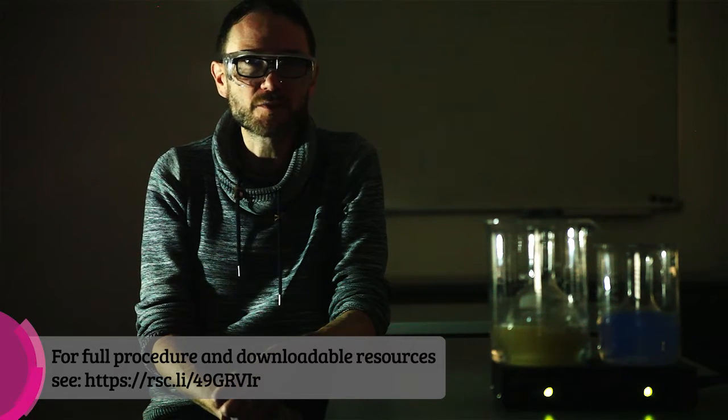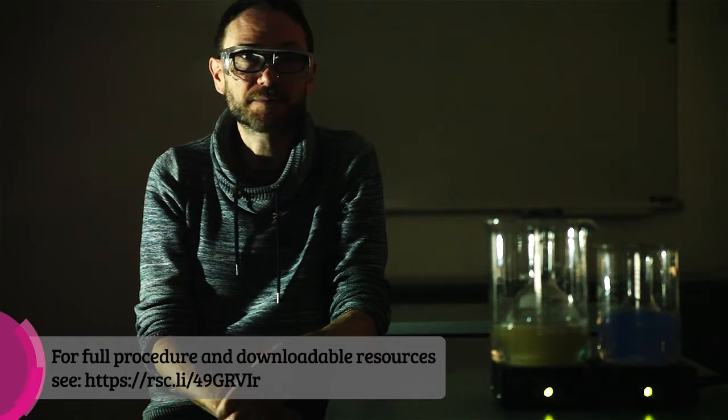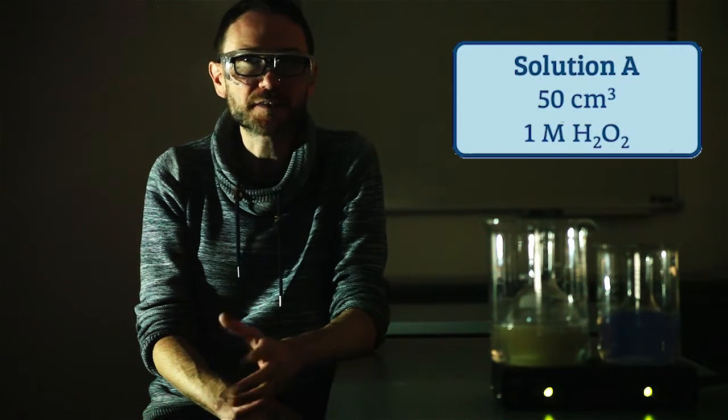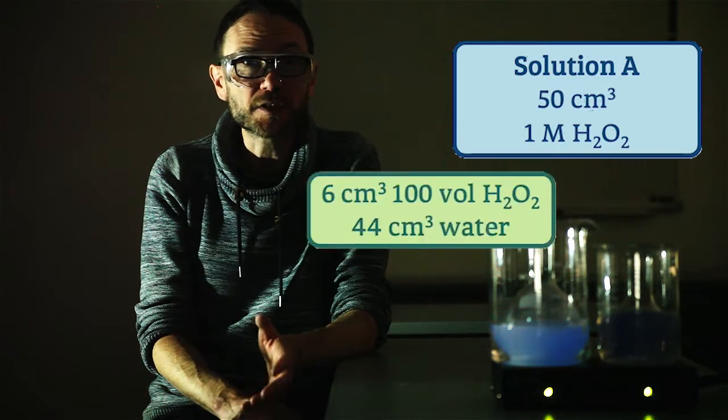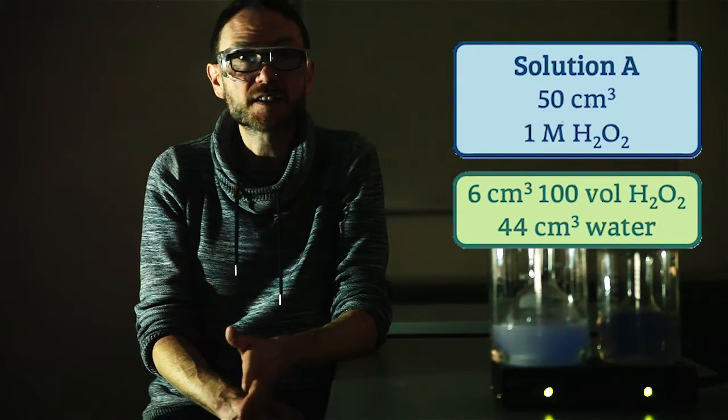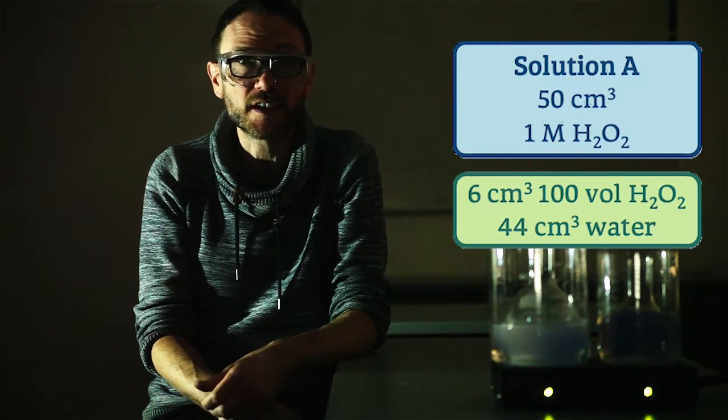We'll need four solutions, which I'll label A, B, C and D. Solution A is 50 cm³ of a 1 molar solution of hydrogen peroxide, made by adding 44 cm³ of water to 6 cm³ of your stock 100 volume peroxide.